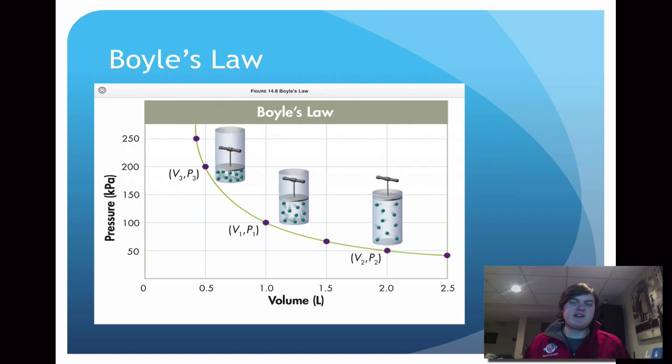Here's a graph that demonstrates Boyle's Law. Pressure in kilopascals is on the y-axis, and volume is on the x-axis. You can see that this curve shows different states where Boyle's Law is true for all of them. We know that P1V1 equals P2V2. If we look at P1V1, it lines up at 100 kilopascals and 1 liter of volume. If we multiply those by each other, it will be 100.